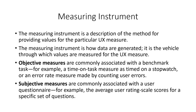Next, we come to measuring instrument. A measuring instrument is a method for providing values for a particular UX measure. When considering an objective UX measure, we use some kind of benchmark task — for example, error rate measure, time on task measure, etc. When using a subjective UX measure, the measuring instrument will be some kind of questionnaire, and we look at what kind of average rating the user gets.